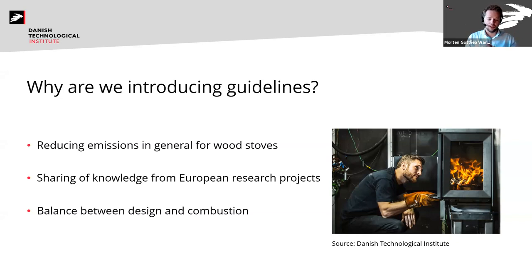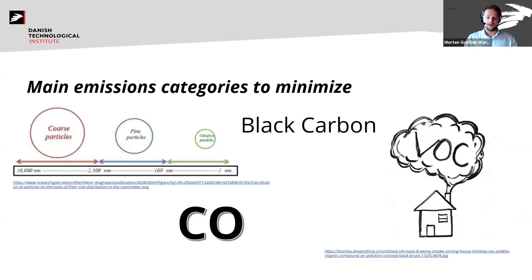We want to introduce the idea of having a balance between design and combustion. The product has to stay in people's living rooms, but we need to consider whether design can be done differently to achieve much better combustion. The emissions we are focusing on reducing in this technical guideline are particles ranging from coarse to fine to ultrafine, black carbon from wood stoves, VOCs, and CO. The guideline is written as a simple technical reading for staff at different manufacturer levels, not as a research paper.